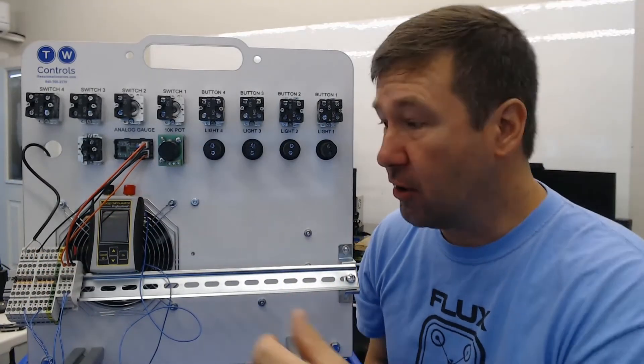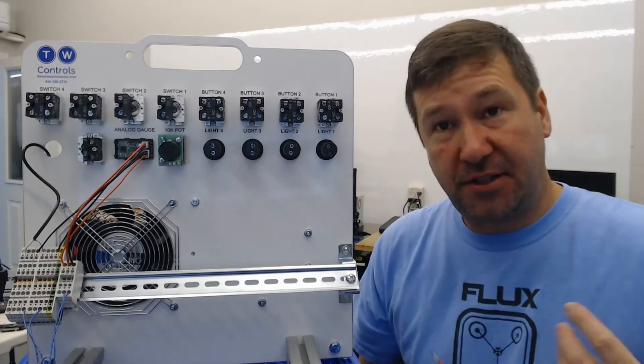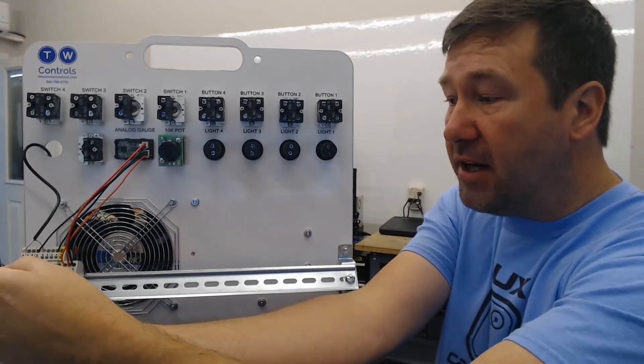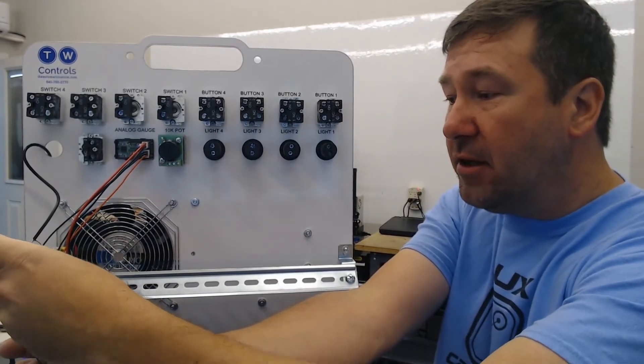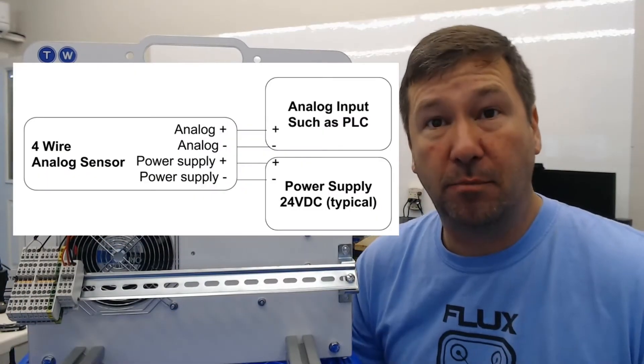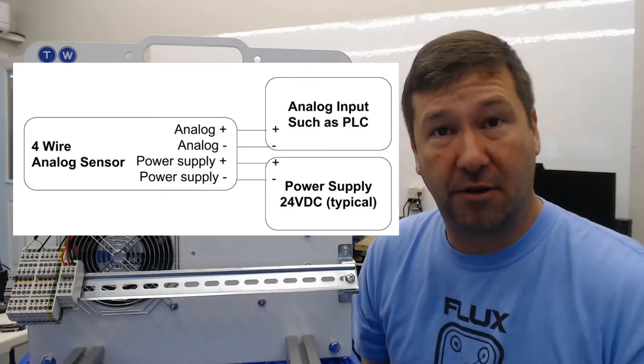So now let's talk about a current source device. A current source is usually externally powered, so it may be powered by 24, 120, 480. Really, it can be powered by anything. It's going to create its own milliamp signal. So you won't have to externally power the loop like you did on the current 2-wire.